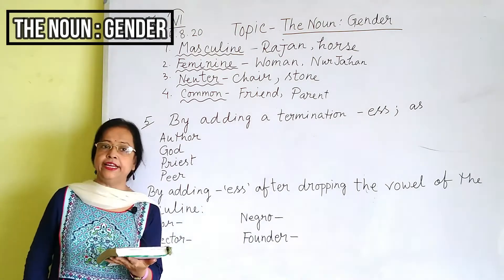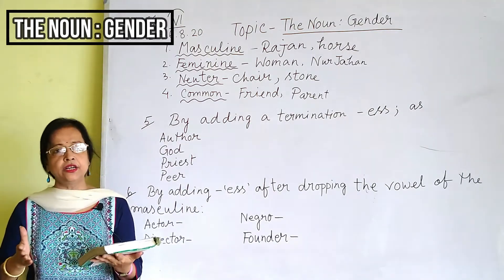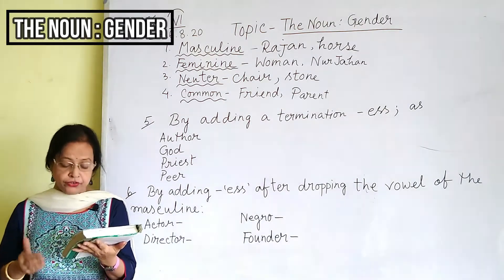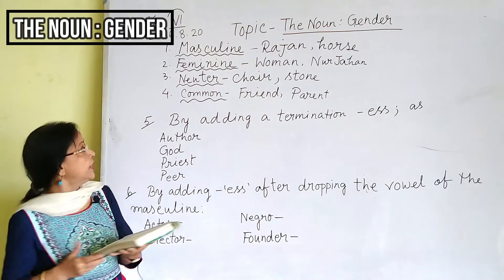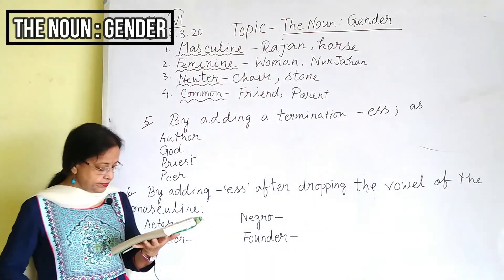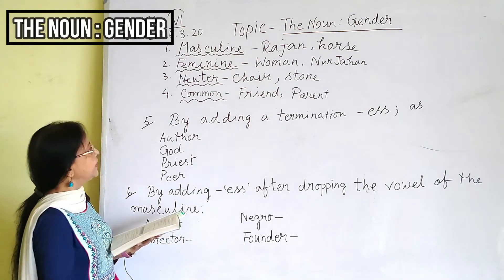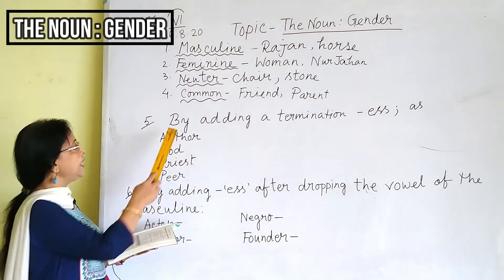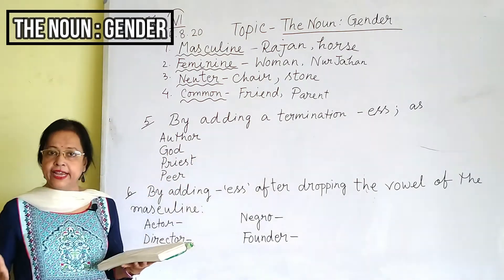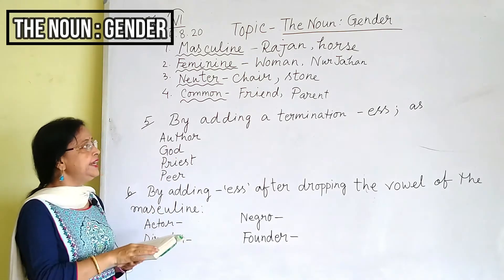Now I am telling you how feminines of nouns are formed. There are different methods. The first is by adding the termination -ESS to the masculine form.